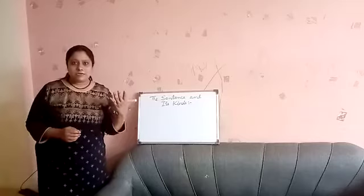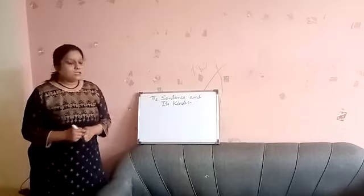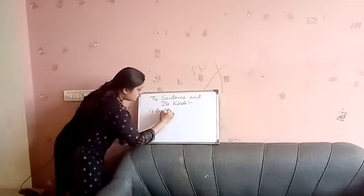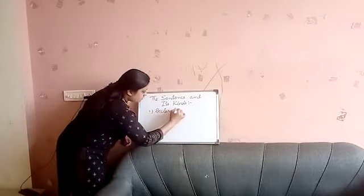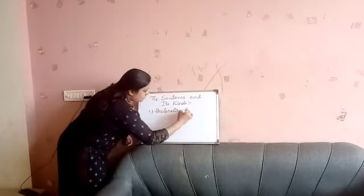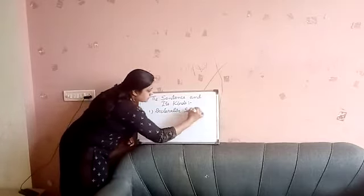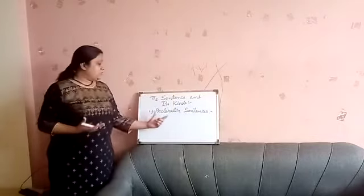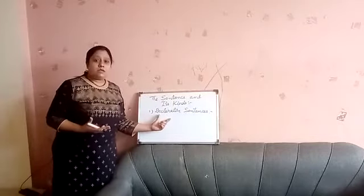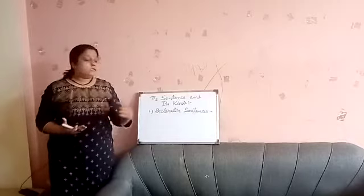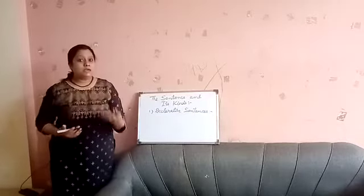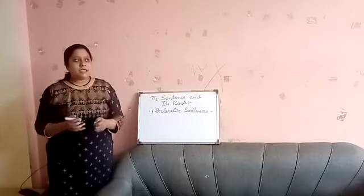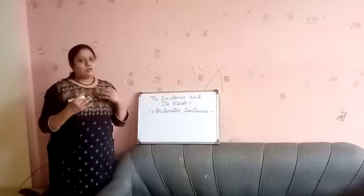There are majorly four basic kinds of sentences. The first one is declarative sentences. As the name itself gives you the meaning — declaration — these are sentences that give some declarations, some statements, like general statements.